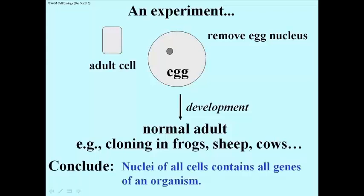So you can conclude from this kind of experiment that the nucleus of all cells of an organism, in the case of the frog it was an intestinal cell, but any cell can be used pretty much. All cells, all somatic cells of an organism contain the same genes as you would find in a fertilized egg.